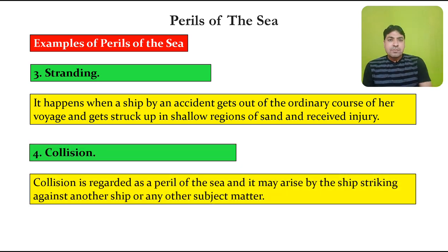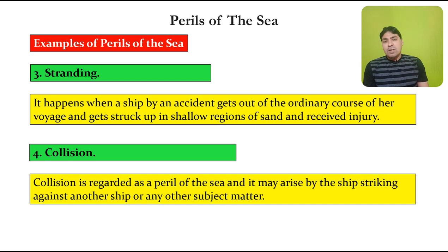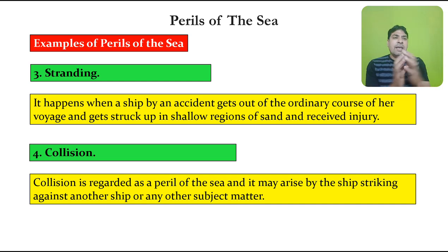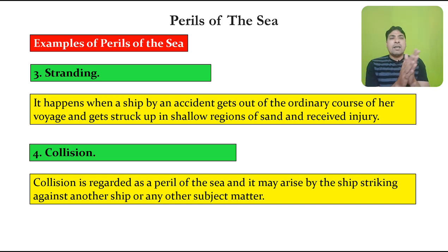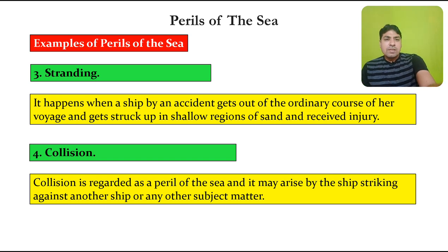The next example is collision. Collision is regarded as a peril of the sea, and it may arise by the ship striking against another ship or any other subject matter. If there is a collision between two ships, or if due to the violent act of winds and waves a ship strikes a rock, that also comes under collision — and collision is one of the examples of perils of the sea.